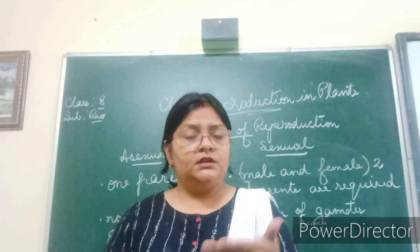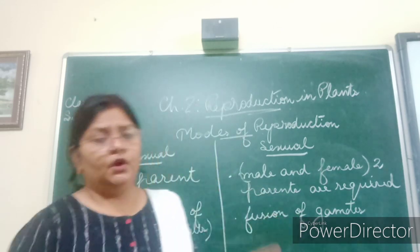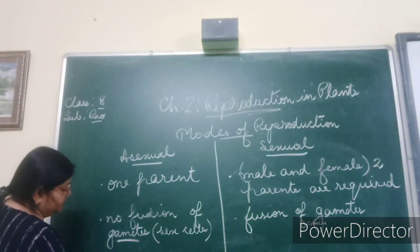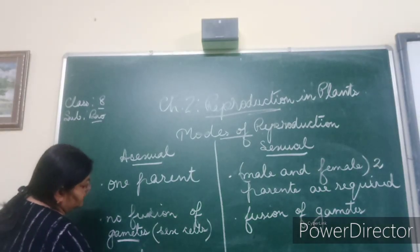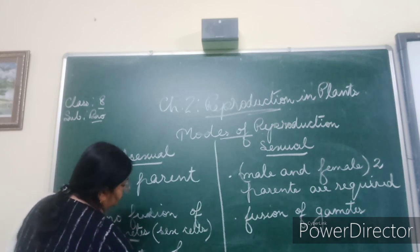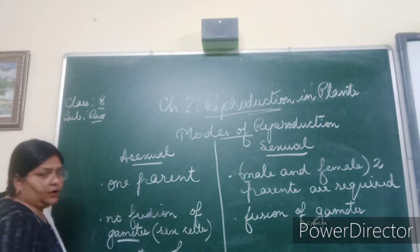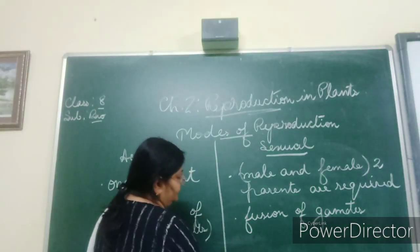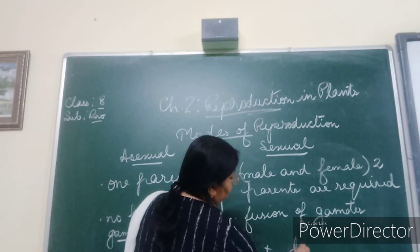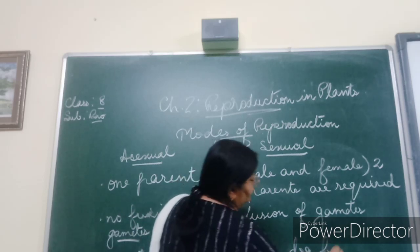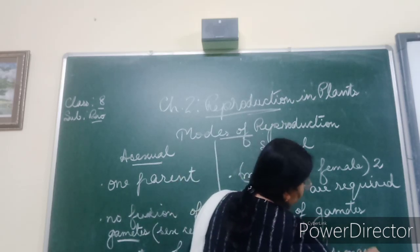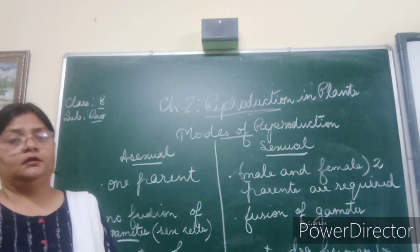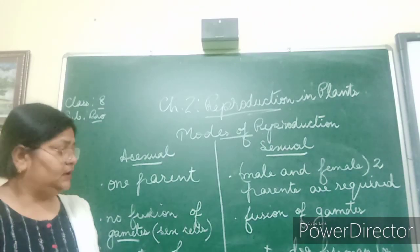Because asexual reproduction does not occur through fusion of gametes, it happens in various ways — especially in lower plants and lower animals. We see asexual reproduction in materials like fungus and in lower organisms. Sexual reproduction is seen in higher organisms — the mammals — such as cats, dogs, and human beings.